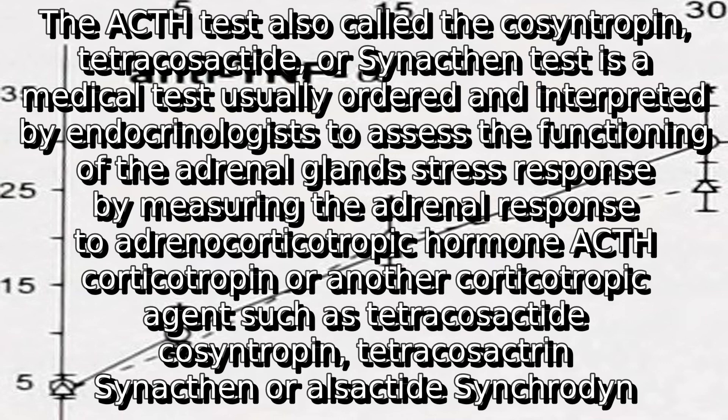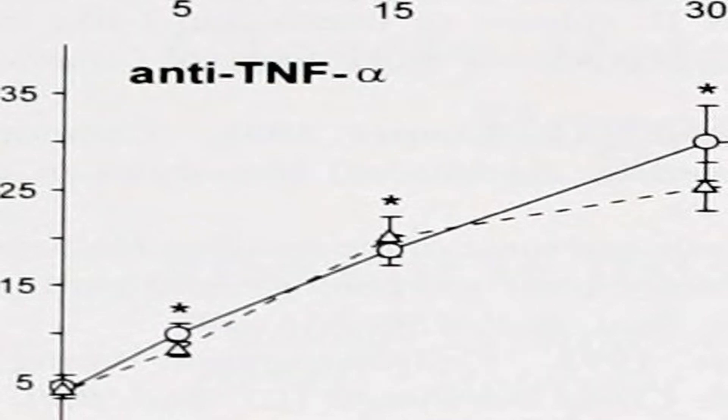The ACTH test, also called the cosyntropin, tetracosactide, or synacthen test, is a medical test usually ordered and interpreted by endocrinologists to assess the functioning of the adrenal gland's stress response by measuring the adrenal response to adrenocorticotropic hormone (ACTH), corticotropin, or another corticotropic agent such as tetracosactide, cosyntropin, tetracosactrin, synacthen, or alsactide synchrotin.